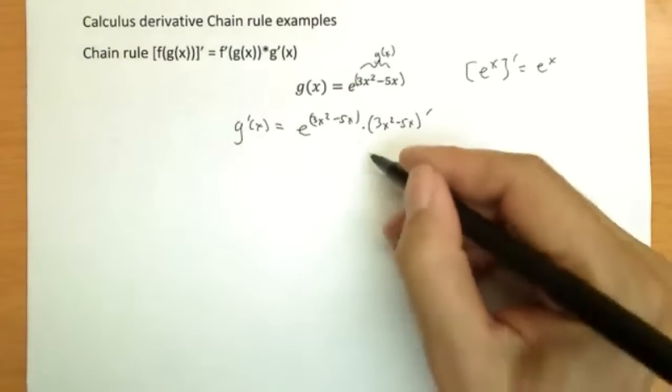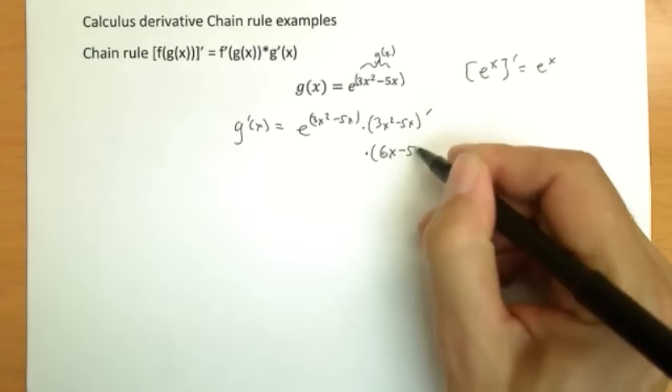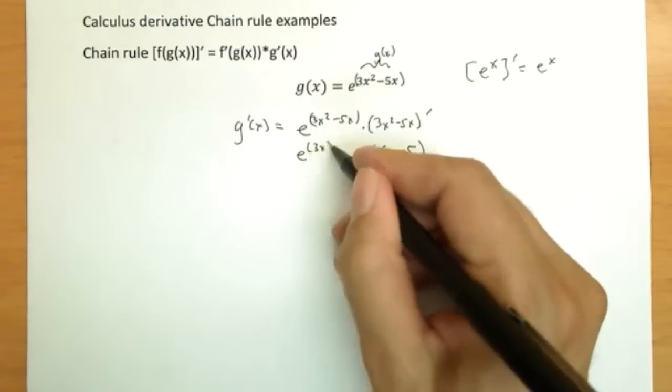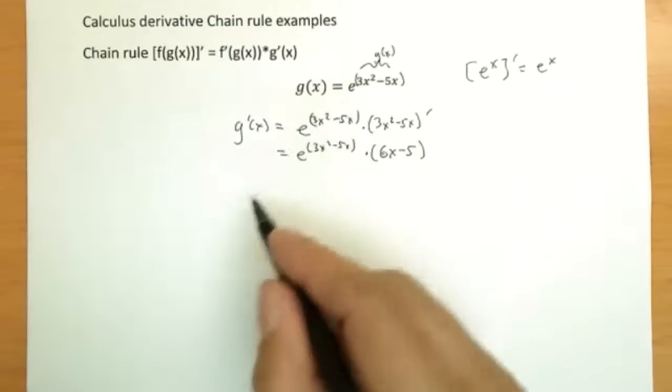And that derivative is actually quite easy to perform. Of course, using the power rule, we'll get 6x minus 5 is my answer. So e to the 3x squared minus 5x times 6x minus 5—that is g prime of x.